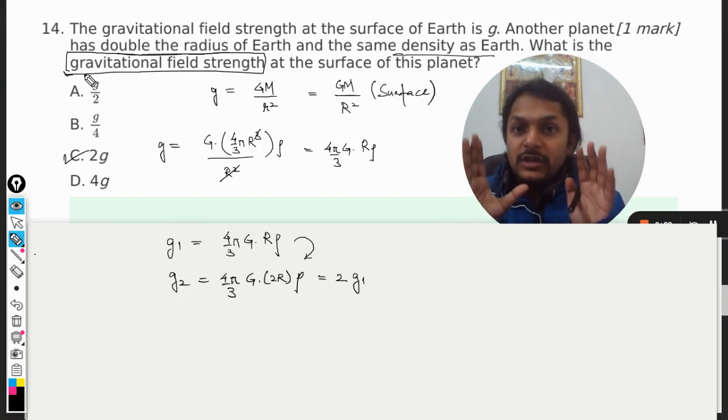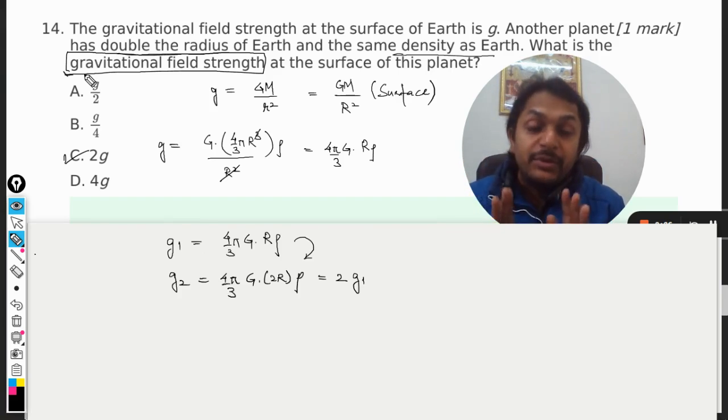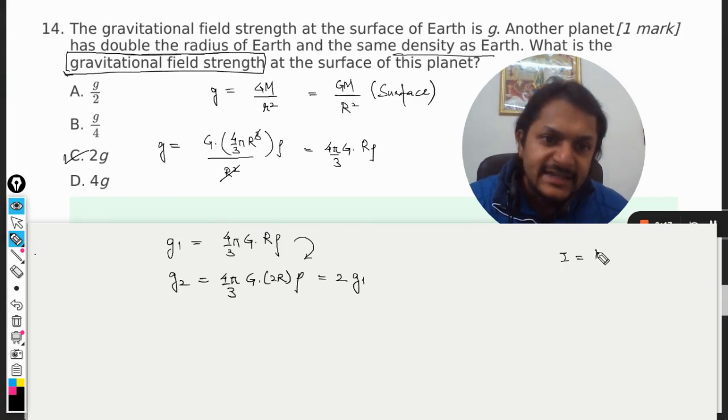Here I'm going to tell you what is gravitational field strength in brief. Gravitational field strength is actually - either you call it gravitational field strength or gravitational field intensity, and this is equal to the gravitational force experienced by the body per unit mass.